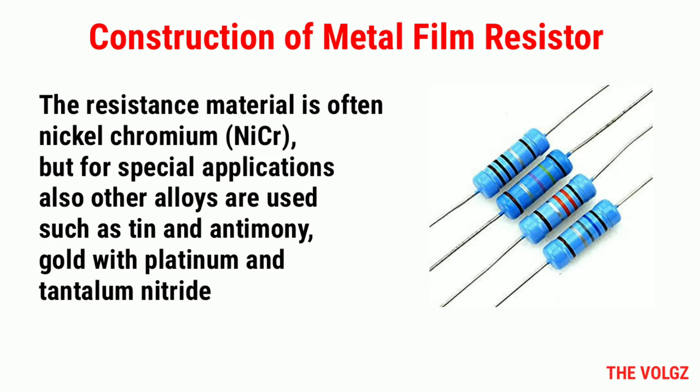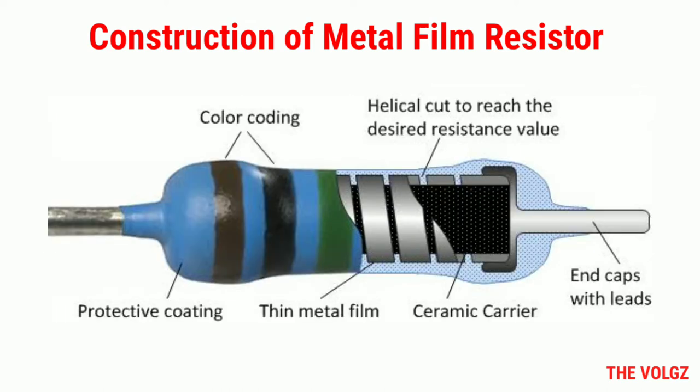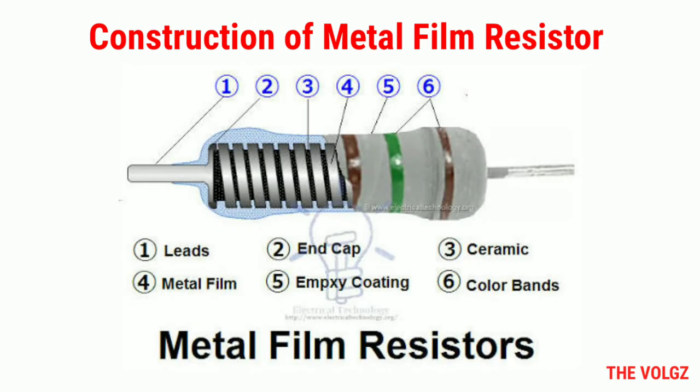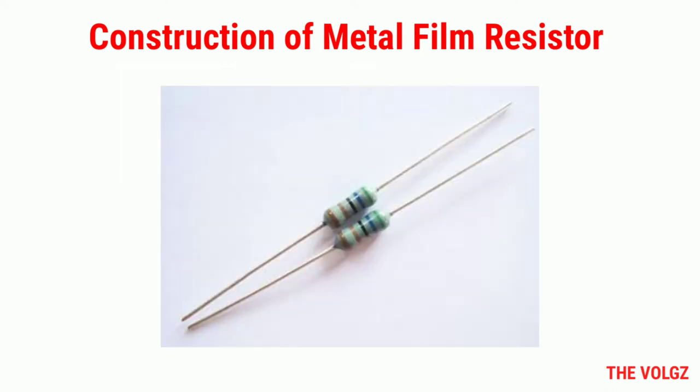For special applications, other alloys are also used, such as tin and antimony, gold with platinum, and tantalum nitride. The stability and resistance are strongly dependent on the thickness of the metal film. A larger thickness of the layer results in better stability and a lower resistance value. On both ends a metal cover is pressed with the connection leads. After this, the desired resistance is achieved by cutting a spiral-shaped slot in the thin metal layer.